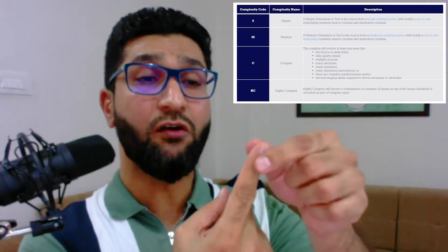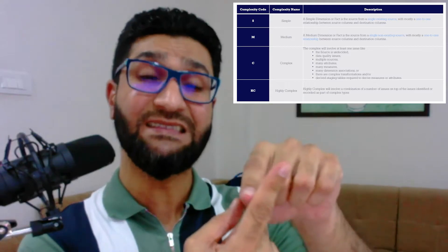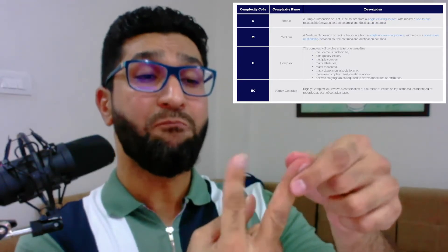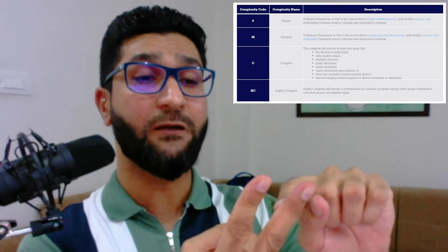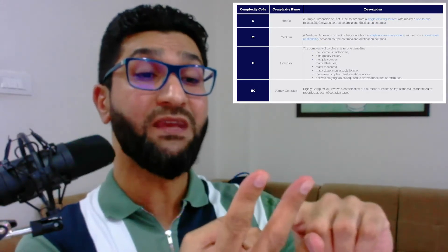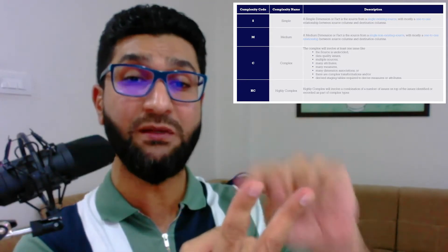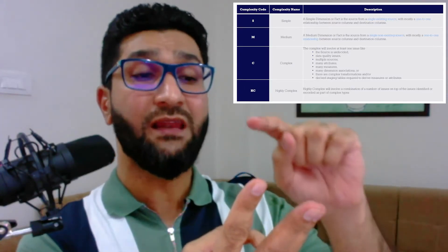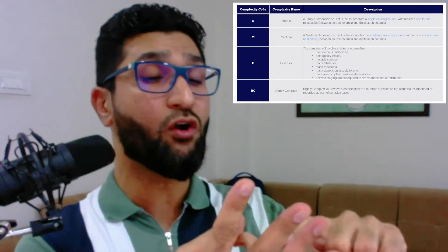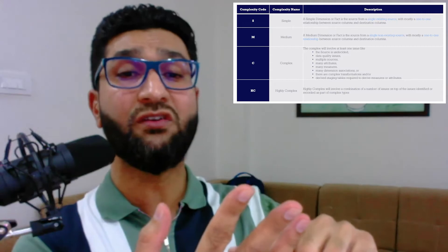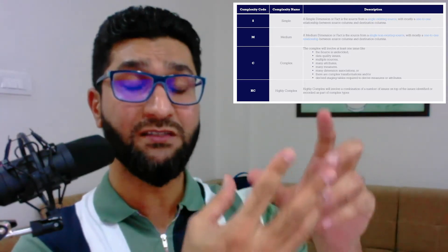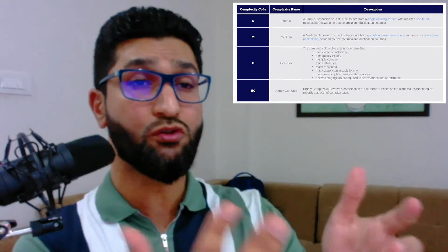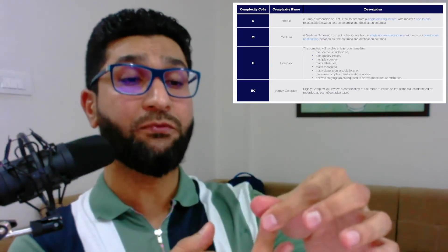Simple: getting your dimension and fact information from an existing source table with a one-to-one relationship between dimension and fact attributes. Medium: getting attributes from a non-existing table created explicitly for reporting, still with a one-to-one relationship. Complex: source is undecided, data quality issues are known, or the source has multiple locations and disparate source system issues.